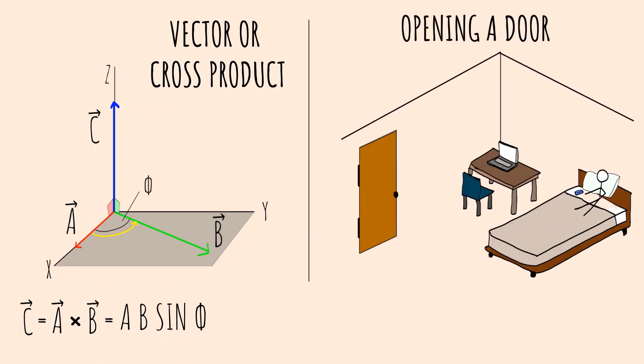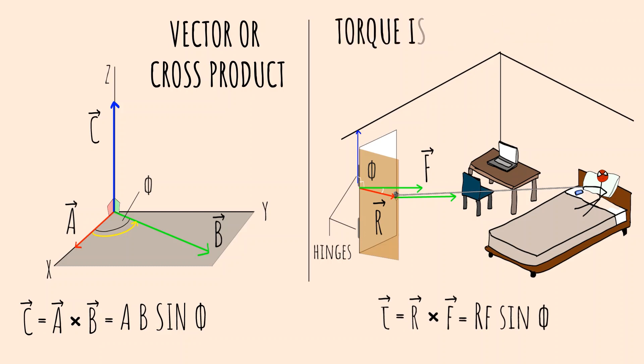And the most common example is whenever you open a door. The cross product of a position vector and the applied force results in a twisting action on the hinges called torque.